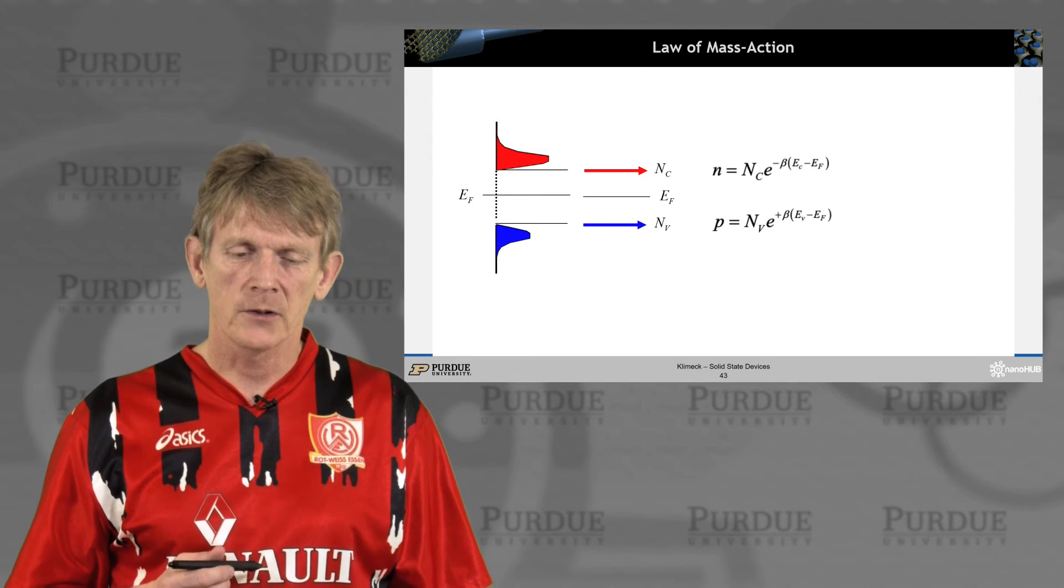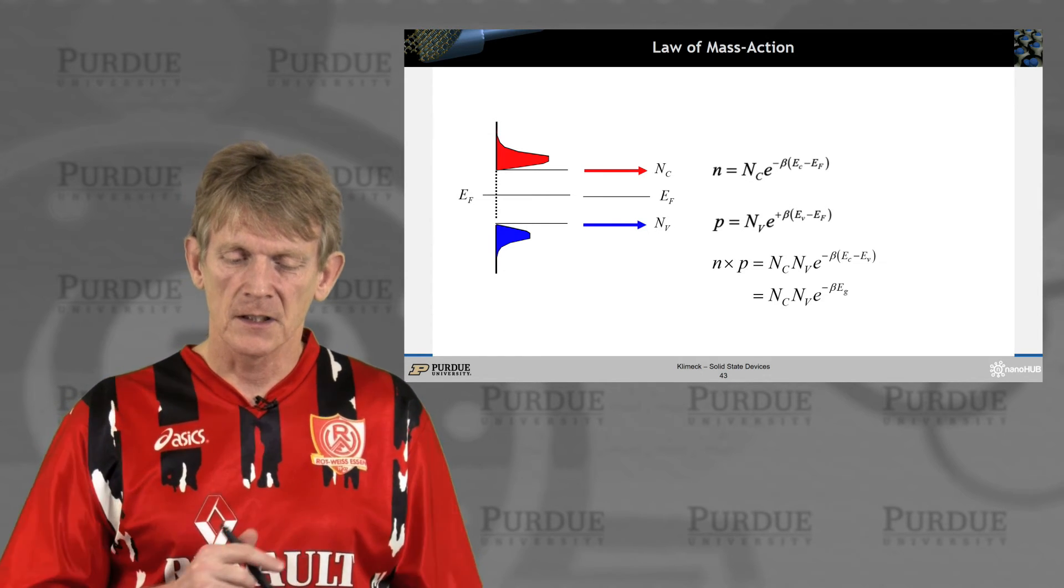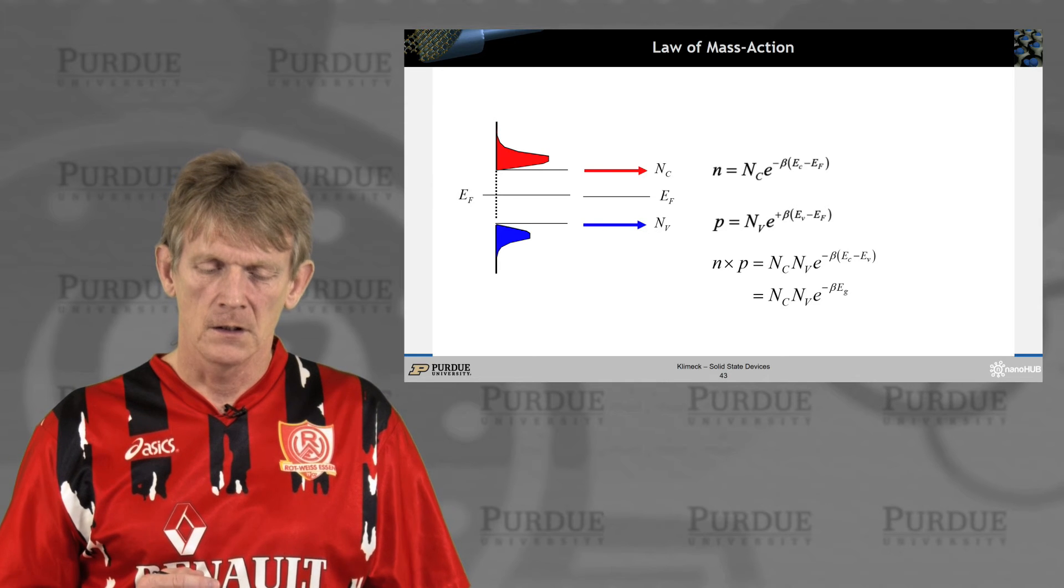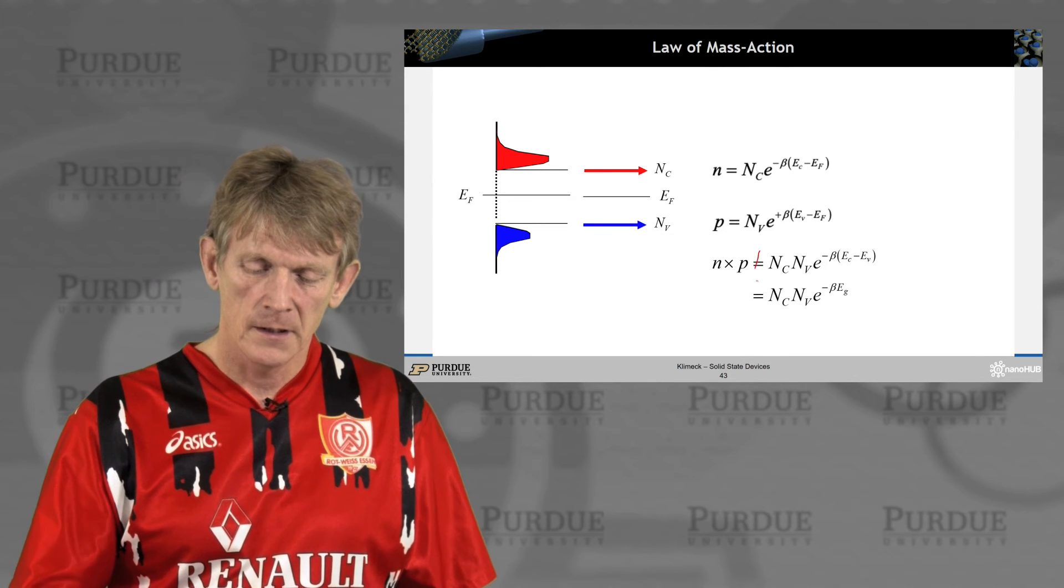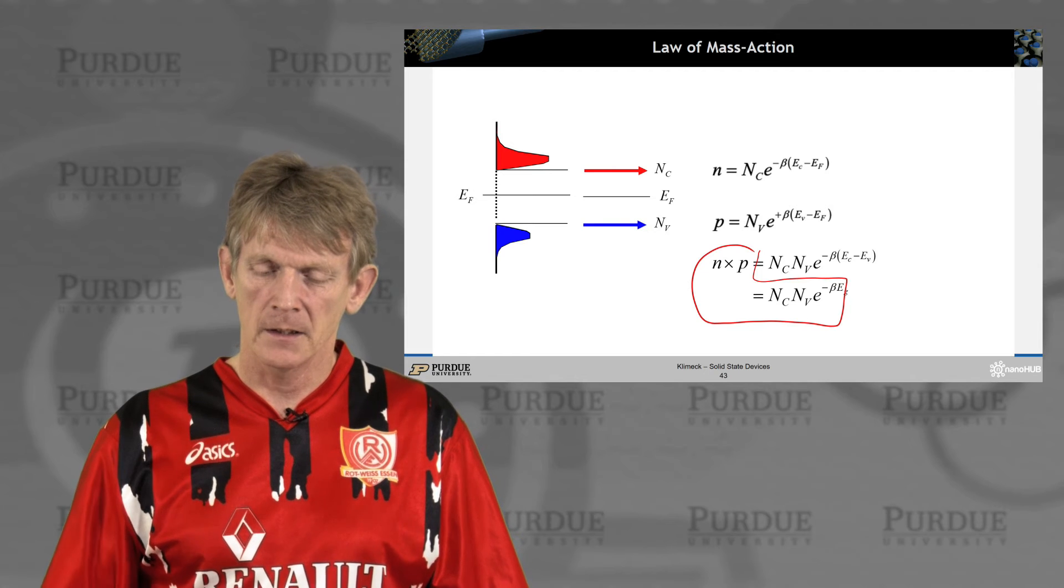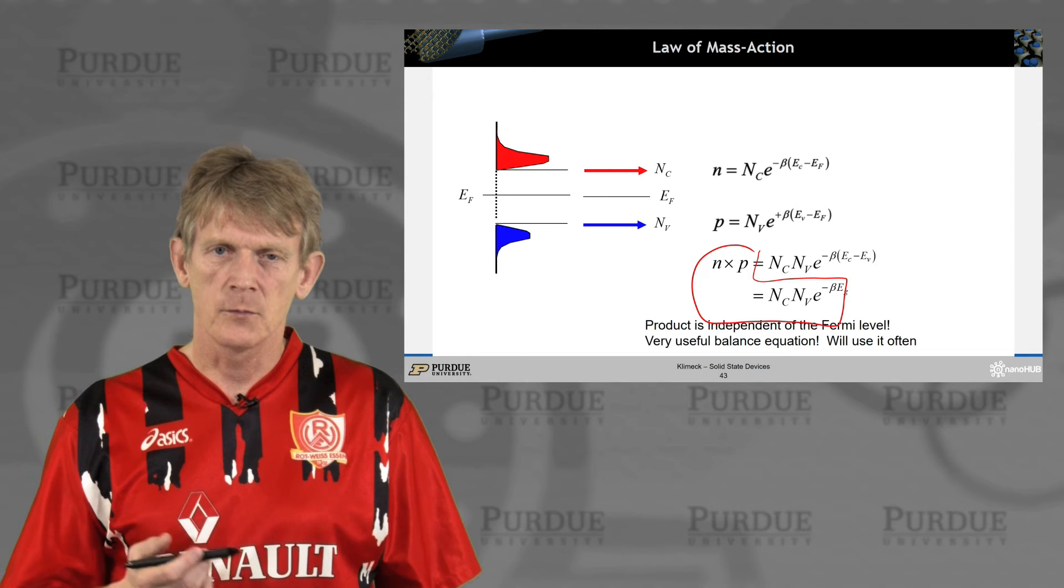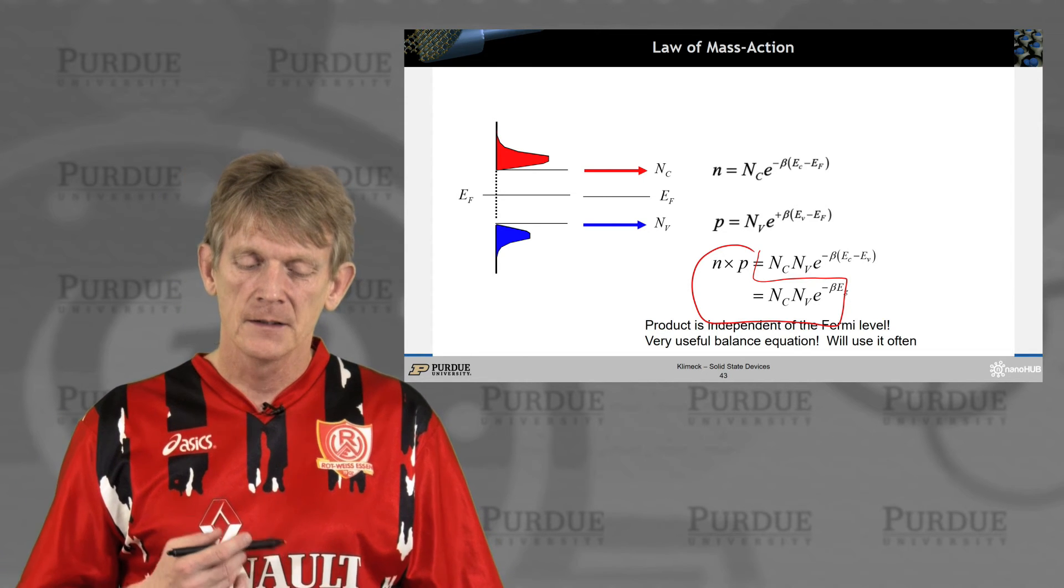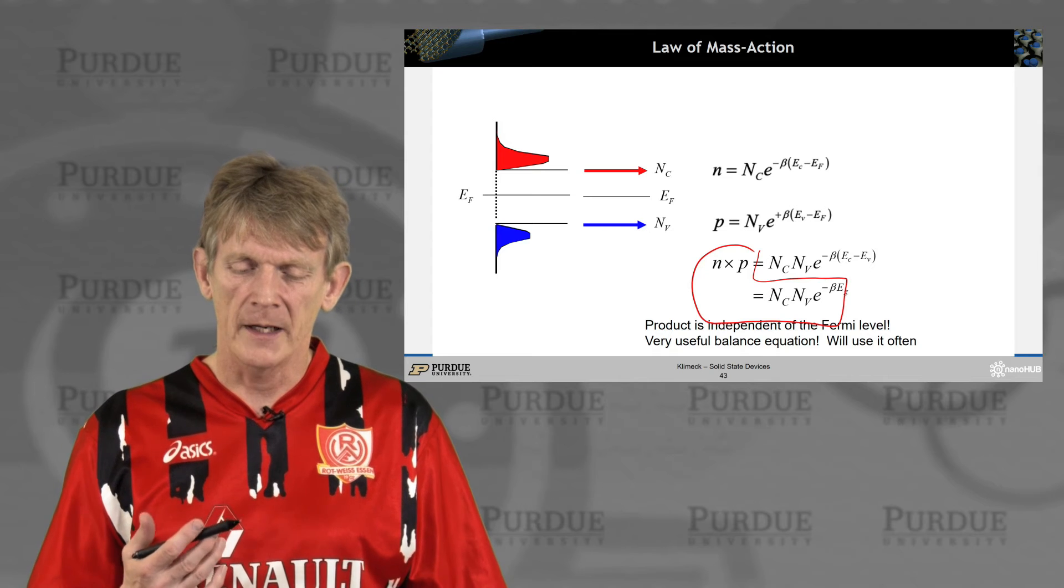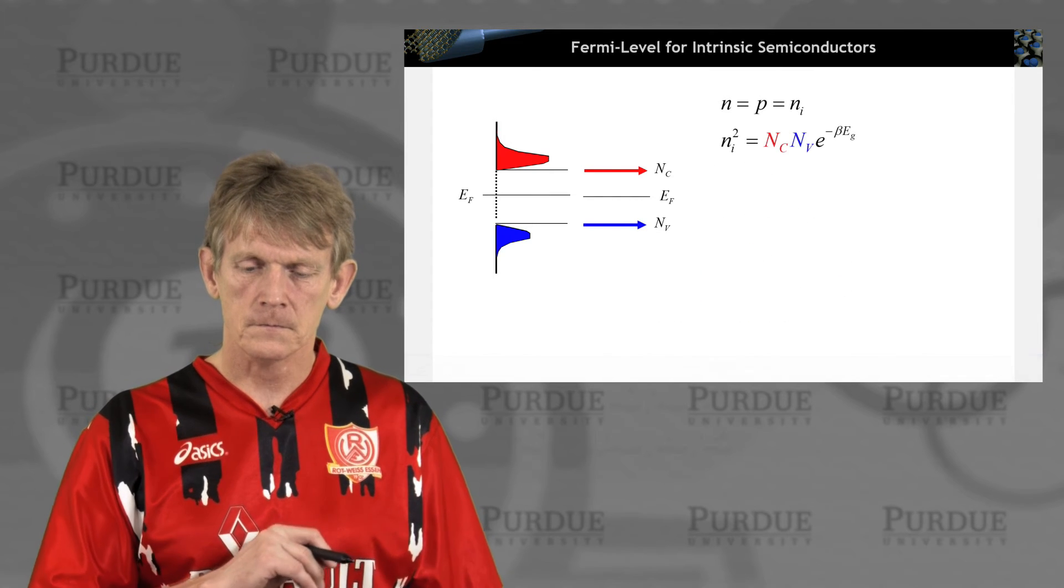But now, first, let's go in and look at the so-called law of mass action. And what this entails is that the product of n times p, so any number of electrons and any number of holes, particles, works out to be Nc times Nv times e to the minus beta band gap. And that is true for any Fermi function, for any distribution of carriers like this. This is a very useful balance equation, and we will use it often for all kinds of calculations. So we'll go back to understanding a relationship between the number of available electrons and holes.